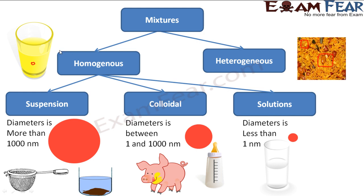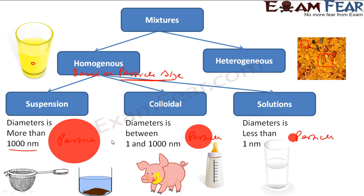Homogeneous mixtures can be further classified into three types based on particle size. If the particle size has a diameter of more than 1000 nanometers — meaning the particle is very big — we call it a suspension.